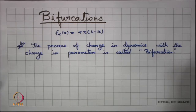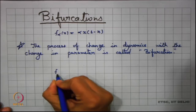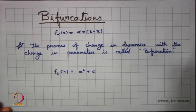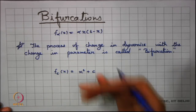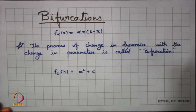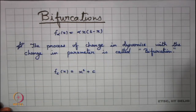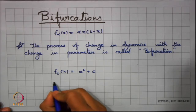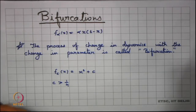In our population model we had studied the logistic map, which is a family of curves. Let us look into another example. We define f_c(x) = x² + c, another family of curves. As c varies, this family varies, and we can look into the qualitative analysis of the dynamics shown by this function. We observe that when c is greater than 1/4, we can have no fixed points.